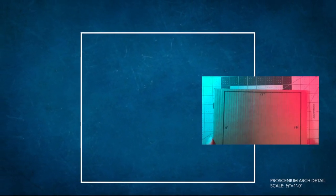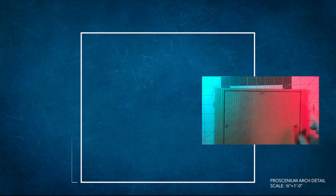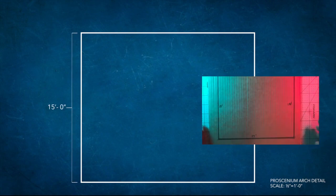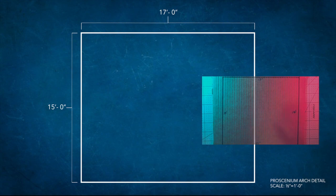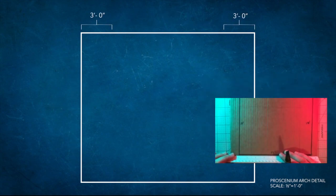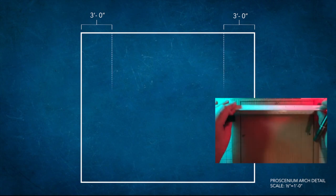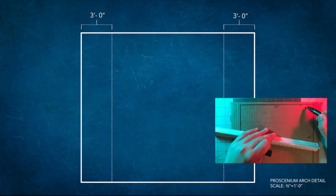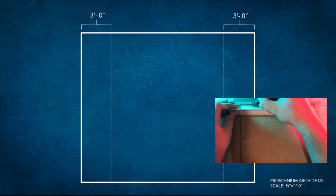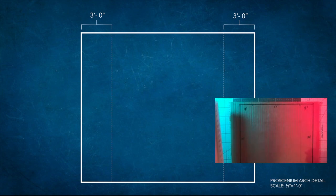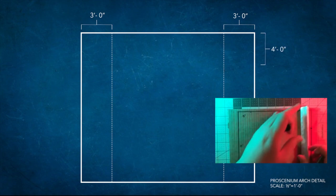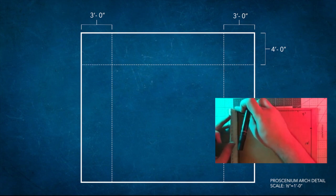Using your ruler draw out two 15 by 17 foot rectangles onto the cardboard. Store the second rectangle for use later. On the first rectangle mark out 3 foot by 15 foot margins on the right and left side of the rectangle. Then mark out a 4 foot by 17 foot header across the top of the rectangle.